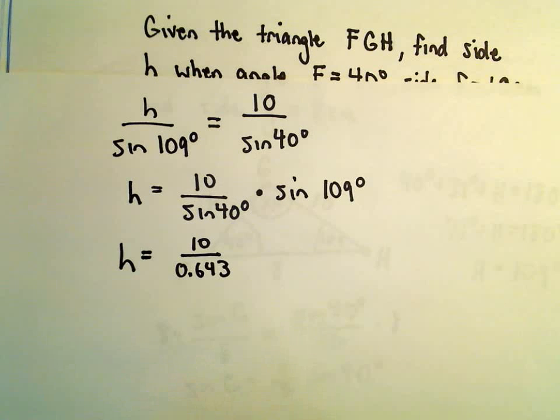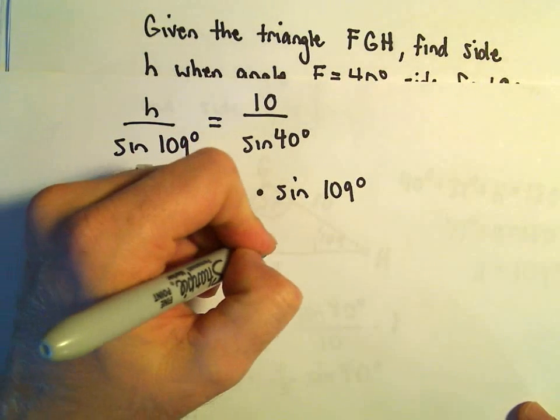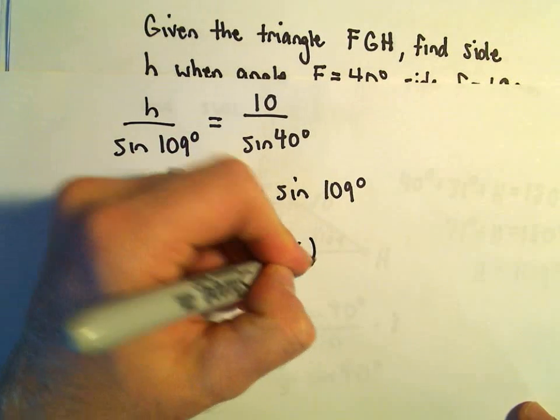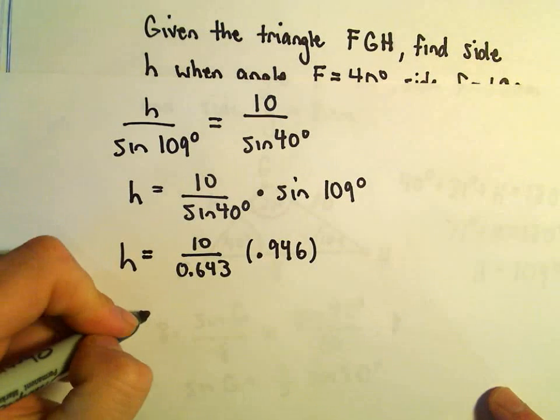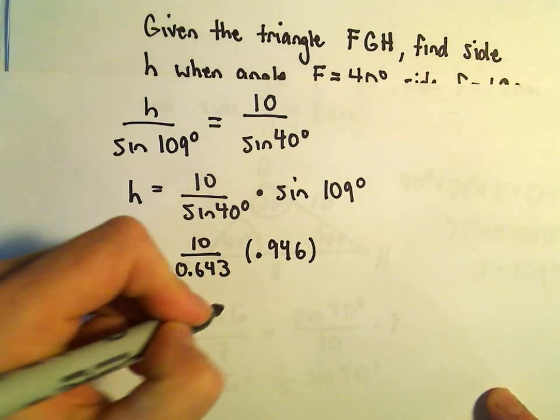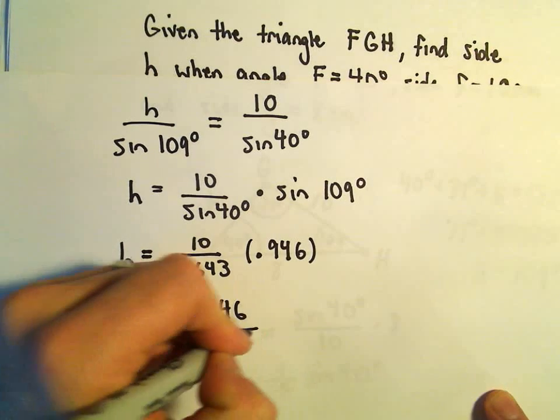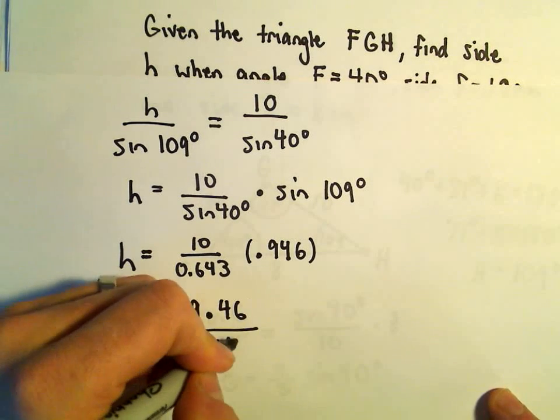We'll have to figure out sine of 109 degrees. So 109. Sine of that, I'm getting to be .946 after rounding. So .946. If we multiply that by 10, that'll simply give us 9.46 over 0.643.